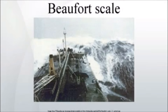The initial scale of thirteen classes did not reference wind speed numbers but related qualitative wind conditions to effects on the sails of a frigate, then the main ship of the Royal Navy, from just sufficient to give steerage to that which no canvas sails could withstand. The scale was made a standard for ship's log entries on Royal Navy vessels in the late 1830s and was adapted to non-naval use from the 1850s, with scale numbers corresponding to cup anemometer rotations.